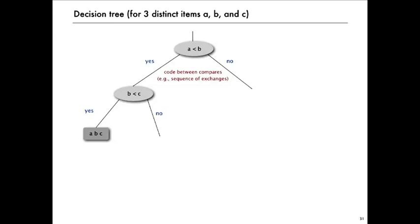And if you find that B is less than C and A is less than B, then you know that the items are in the order A, B, C. If B less than C goes the other way, then it takes another comparison to determine the order.